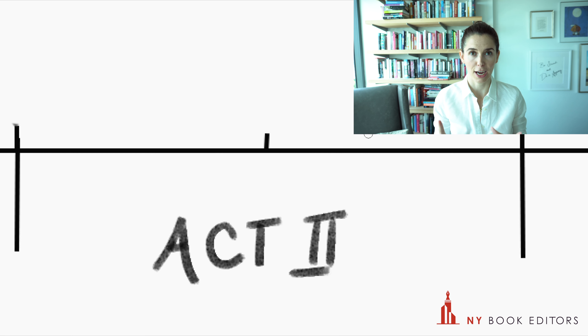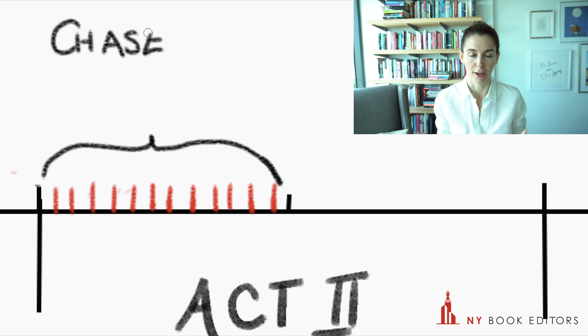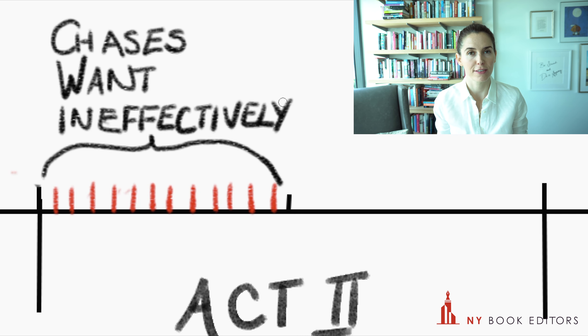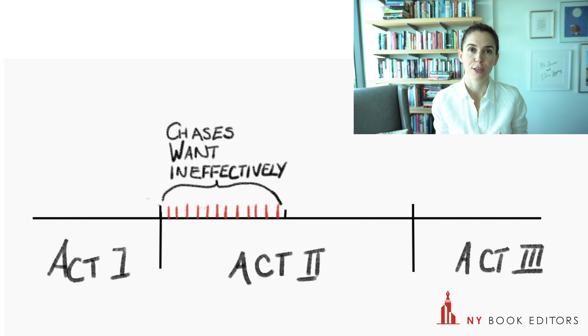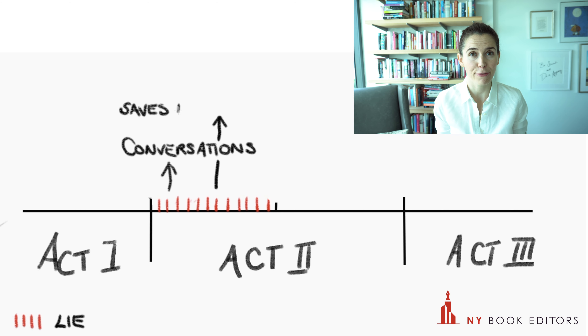In the first half of act two, there are a series of interactions with Mr. Rochester, which lead Jane to fall in love with him. Now her want is even more specific — she wants to be loved by him. What distinguishes the first half of act two in a character arc is that the character actively pursues her want and her goals, but all the actions she undertakes are ineffective. So Jane has long conversations with Mr. Rochester. She even saves his life from a fire. It just doesn't lead anywhere.